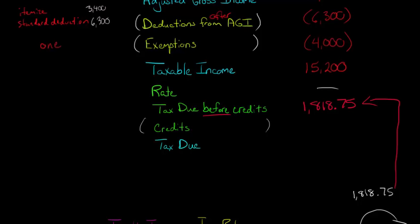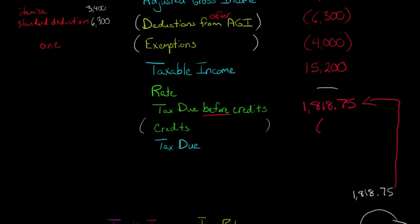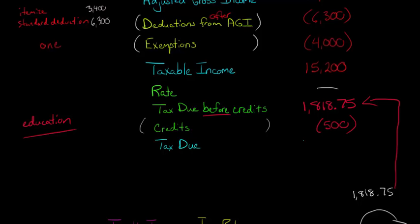Now we might have some tax credits. Tax credits reduce tax dollar for dollar — deductions reduce taxable income, but credits reduce tax directly. Let's say we have $500 in tax credits from something like an education credit, such as the lifelong learning credit, for some tuition we paid. That directly reduces our tax due before credits, bringing it to $1,318.75.